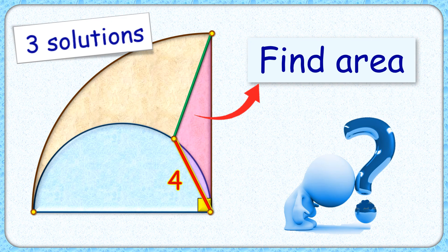Welcome to this interesting question. We have a semicircle inside a quadrant. A random point is selected on the circumference of the semicircle, and its distance from the center of the quadrant is 5 centimeters. The exciting part is that with this limited data, we have to find the area of this red triangle.